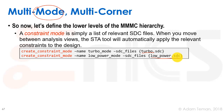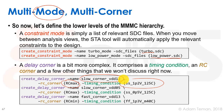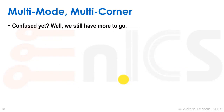Delay corners are a bit more complex. We write create_delay_corner with names like slow_corner_vdd1p2, slow_corner_vdd0p5, and fast_corner_vdd1p3. Each delay corner must reference an RC corner and a timing condition. The RC corner describes how we run RC extraction to obtain resistances and capacitances, while the timing condition describes how we run timing using our libraries.